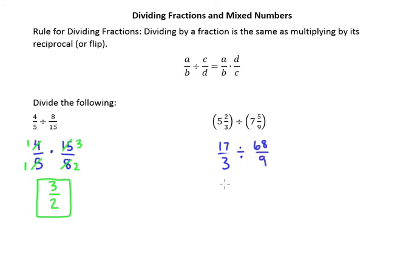So we leave the first fraction alone, multiply by the reciprocal of the second fraction. Now I can easily see that 3 and 9 can do some canceling. So 3 divided by 3 is 1, 9 divided by 3 is 3.